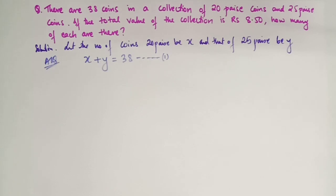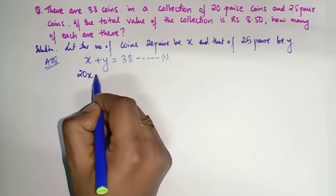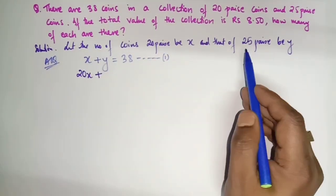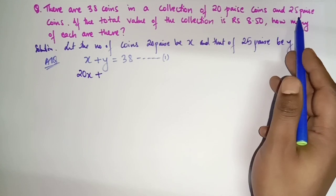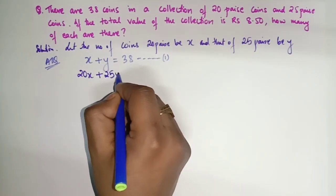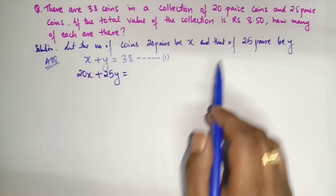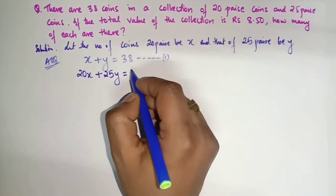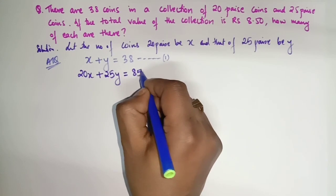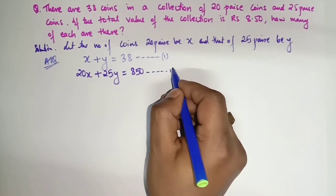Now, 20 paise coins: 20x. Plus 25 paise coins: 25y. The total value equals 850 paise. So 20x + 25y = 850. We take this as Equation 2. Why I have written 850 paise: because the coins are in paise (20 paise and 25 paise), not rupees, so this side also has to be in paise. Since 1 rupee = 100 paise, 8 rupees 50 paise = 850 paise.